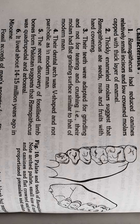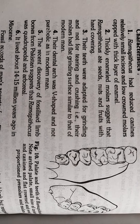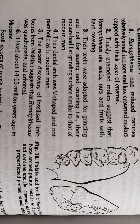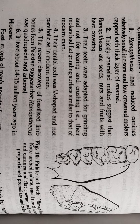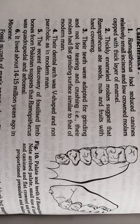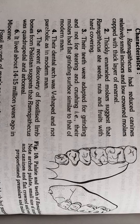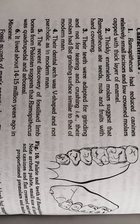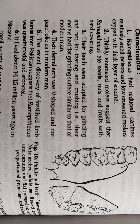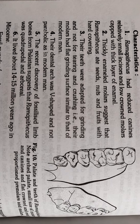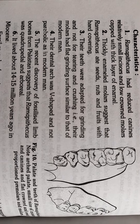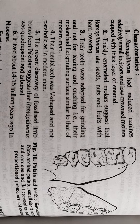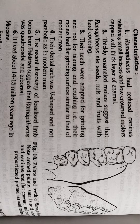Their dental arch was V-shaped — you can see in this picture the arch is V-shaped in structure — and not parabolic, just like in the case of modern humans. The recent discovery of fossilized limb bones from Pakistan suggests that Ramapithecus was quadrupedal and arboreal.